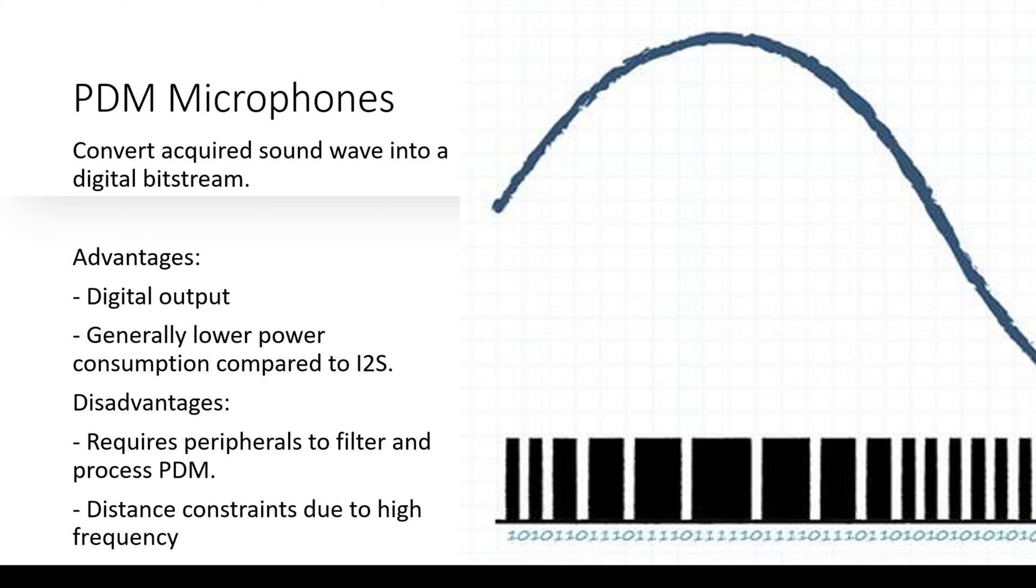It's the same thing with PDM microphones. They convert a sound wave into a digital bit stream. They have a digital output. Same thing, we have higher noise immunity, generally lower power consumption compared to I2S. This is because we're using two lines. Now before I begin, PDM stands for pulse density modulation. And in principle, we have our sound wave converted into bits. So you can see on the higher peak we have more ones compared to the lower. And we can generate or acquire this sound waveform.